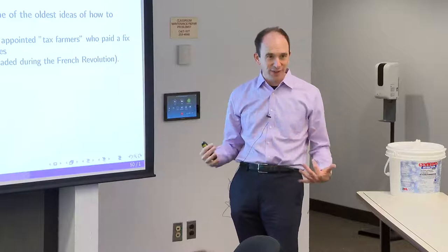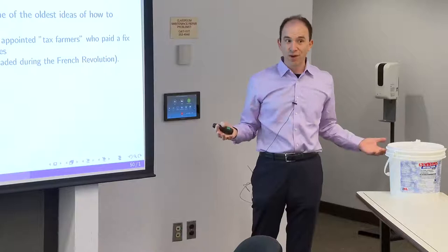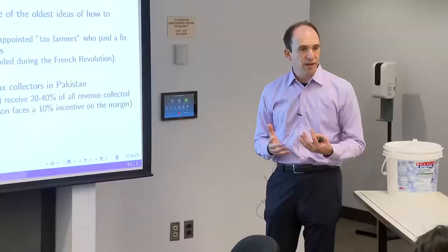We wanted to understand this in a more modern context. In a lot of developing countries where information problems are severe and you need to motivate people to collect taxes, maybe the state should revisit this trade-off. We did this through a randomized experiment in Pakistan working with property taxes, collected by teams of three tax staff who, if in the treatment group, received 20 to 40% of all revenue collected above a historical benchmark.